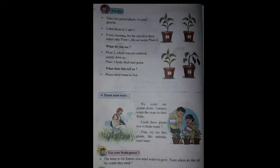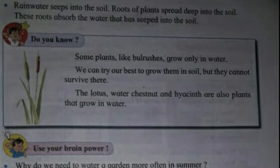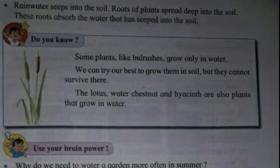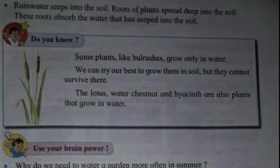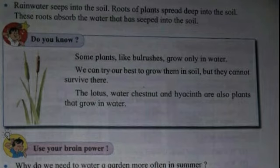Use your brain power — the trees in the forest also need water to grow. From where do they get the water they need? Rain water seeps into the soil, and roots of plants spread deep into the soil to absorb that water. Some plants grow only in water; the lotus and water chestnut are plants that grow in water.